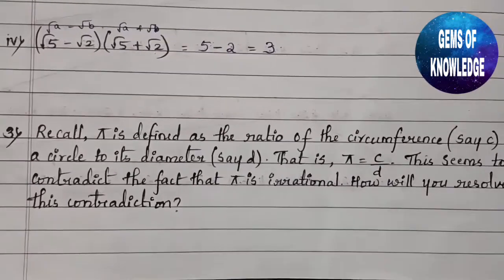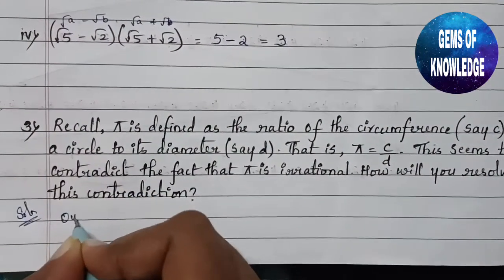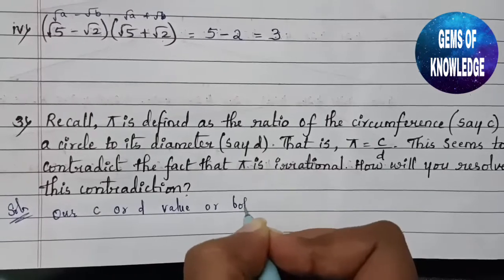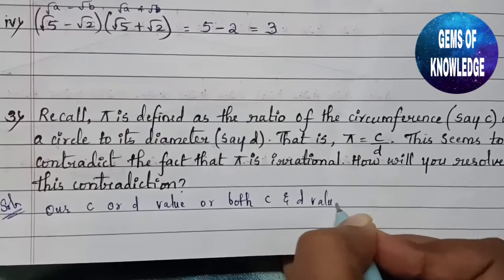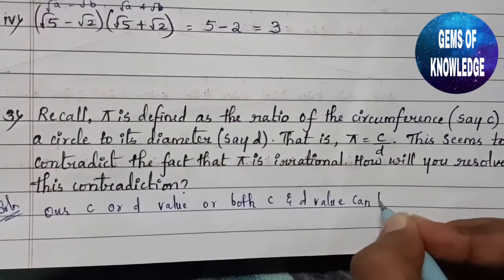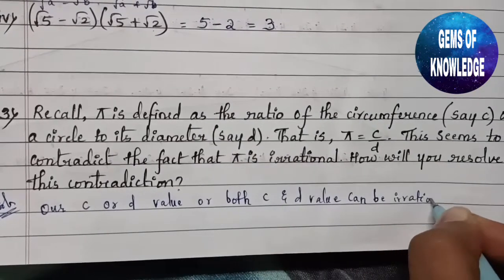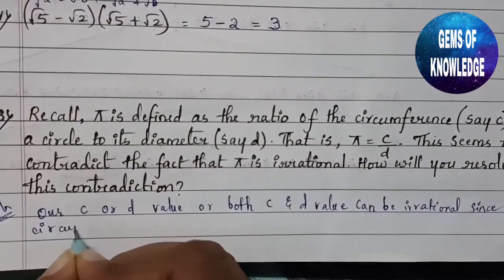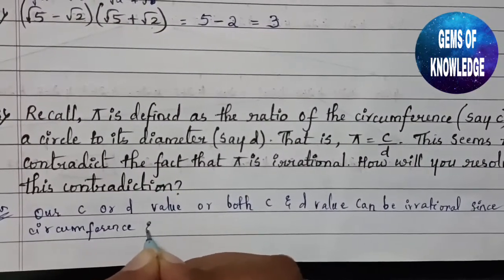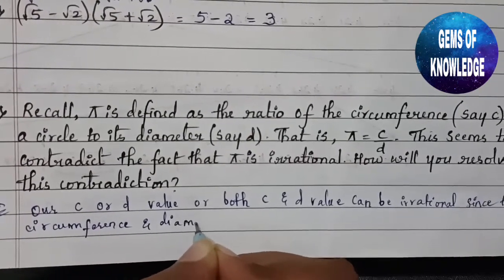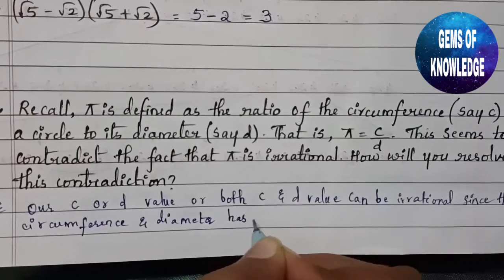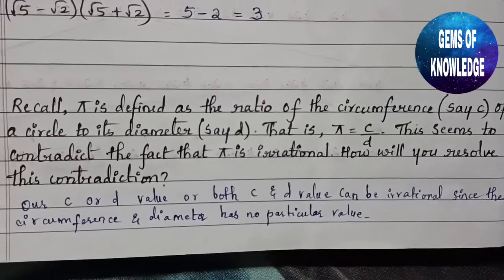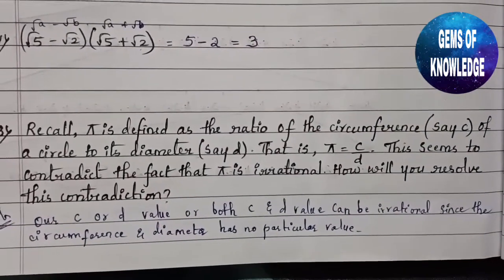Since there is no particular approximate rational value, either C or D, or both, can themselves be irrational numbers. Since circumference and diameter have no particular fixed rational value, pi remains irrational.